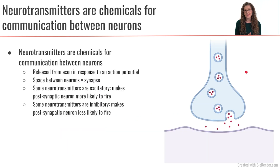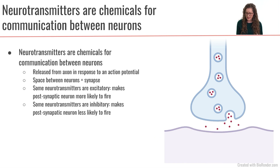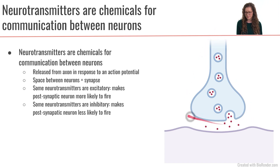So how do neurons communicate with each other? The language that neurons use to communicate between each other and between other tissues are called neurotransmitters. Neurotransmitters are chemicals. So in this image, we're looking at one neuron, a space, and then another neuron — or it could also be a tissue like a muscle cell. This space in between the two is called a synapse. This first neuron here is called the presynaptic neuron because it's before the synapse, and then we have the postsynaptic neuron.